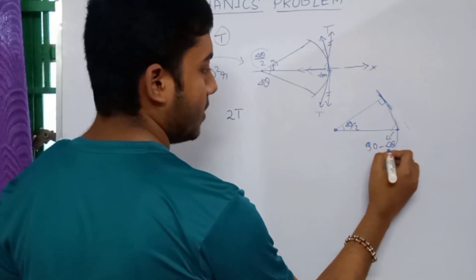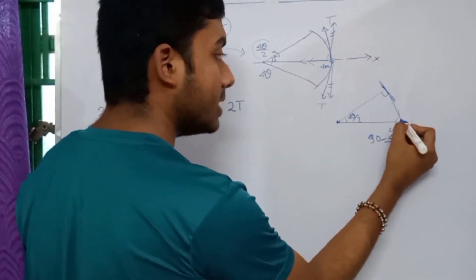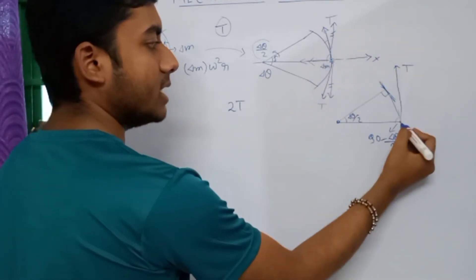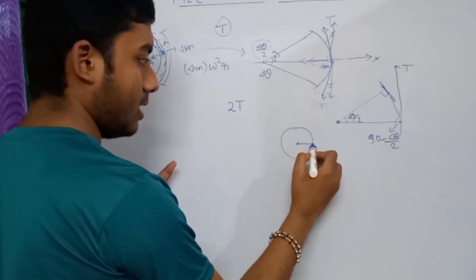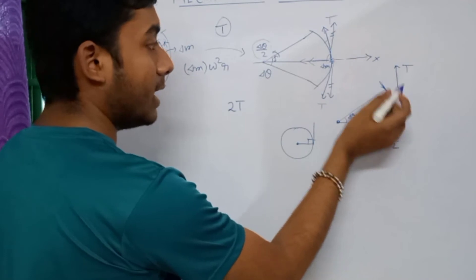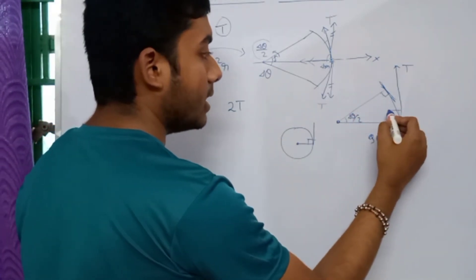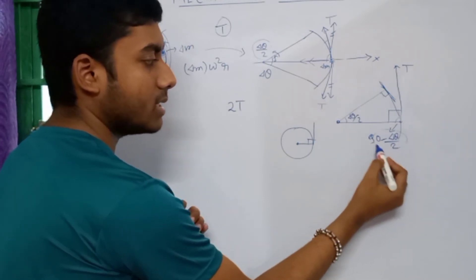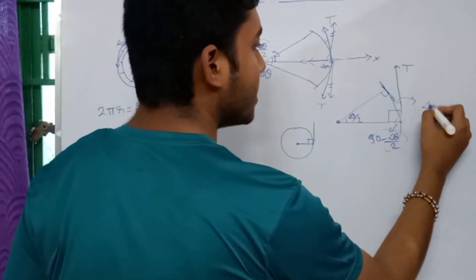This angle in the triangle is 90 degrees. Since the radius and tangent to a circle are always perpendicular, this angle is 90°. The arc subtends δθ/2, so this small angle — which is what we need — works out to δθ/2.